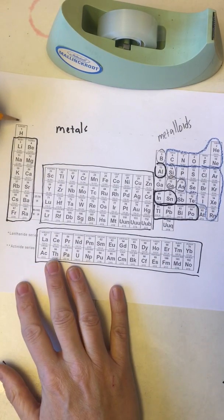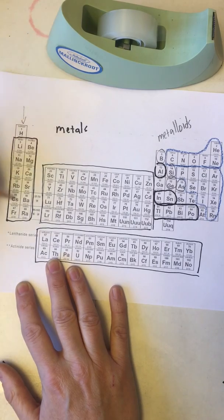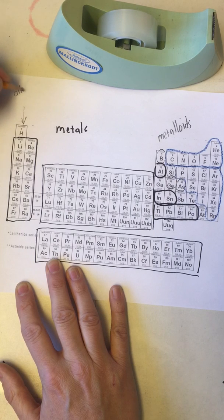The first are the alkali metals which are in this first column. Lithium, sodium, potassium, rubidium, cesium, and even francium, although francium is an unstable element so we don't tend to work with it. These are called the alkali metals.